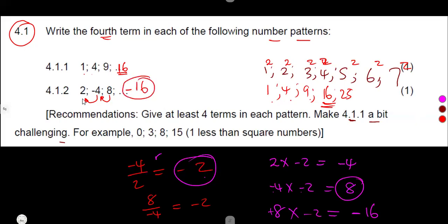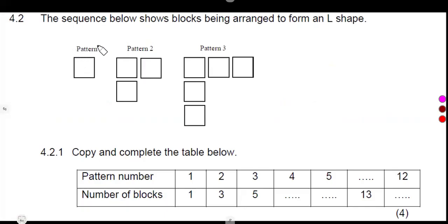It's not always the case that questions are direct — sometimes we must study the pattern properly. The first pattern's fourth term was 16 and the second was negative 16. Now let's consider question 4.2: the sequence below shows blocks arranged to form an L-shape. We have pattern 1, pattern 2, and pattern 3.